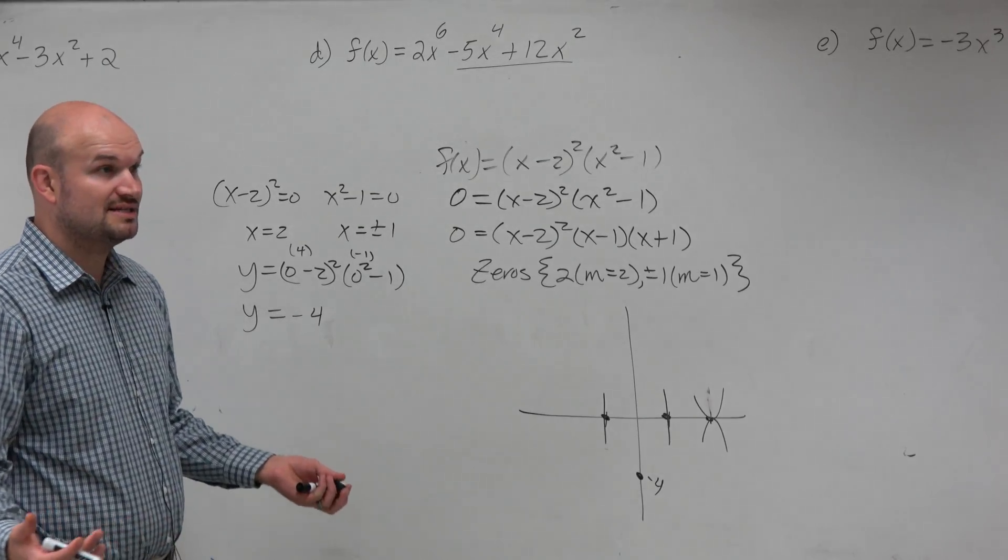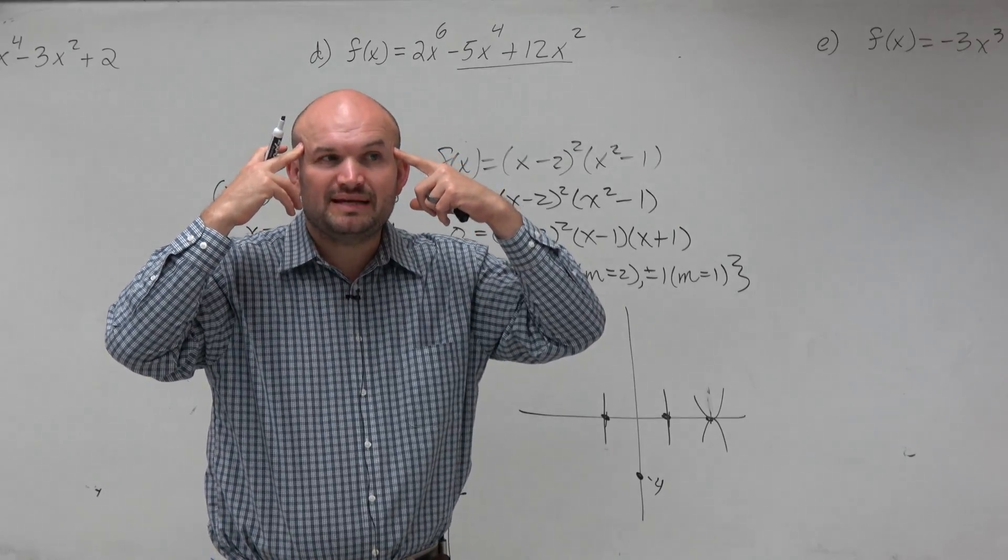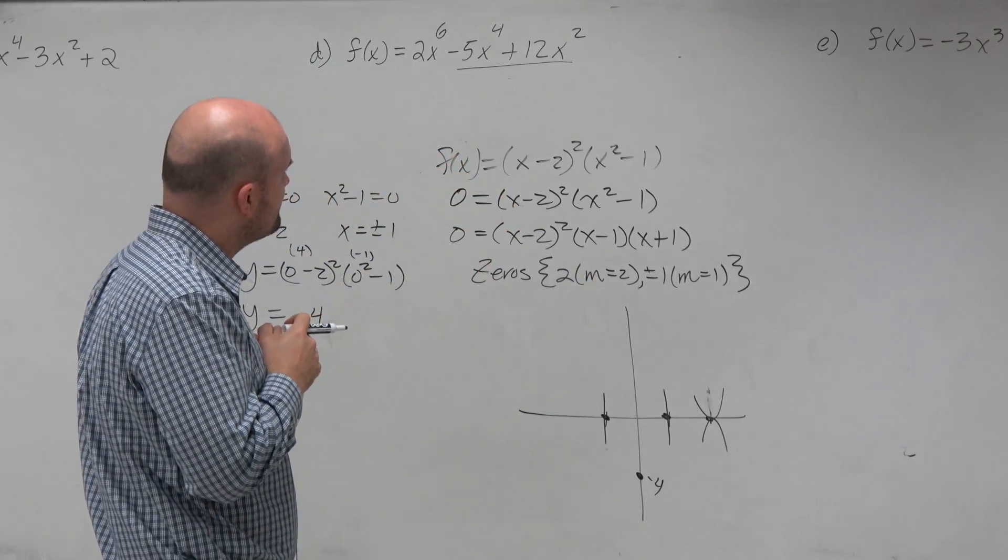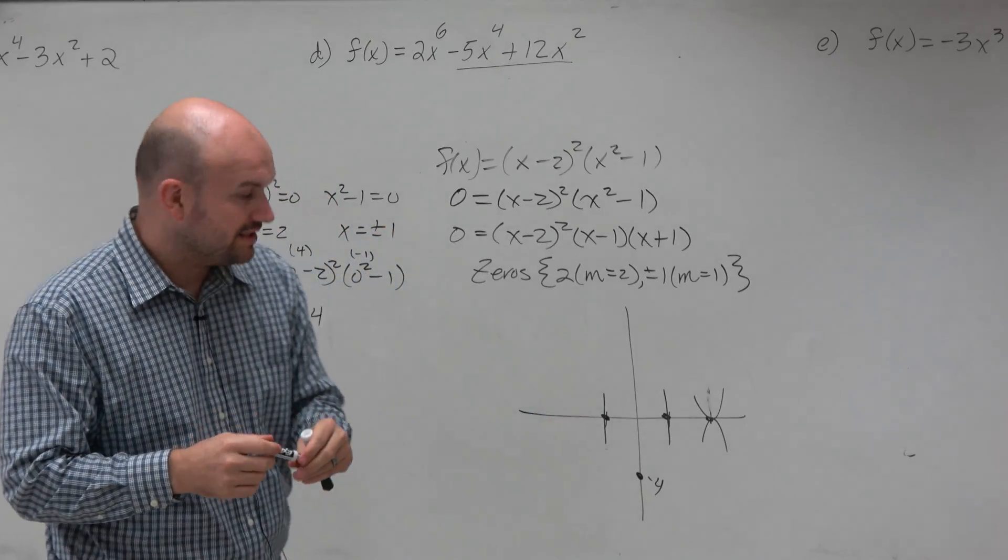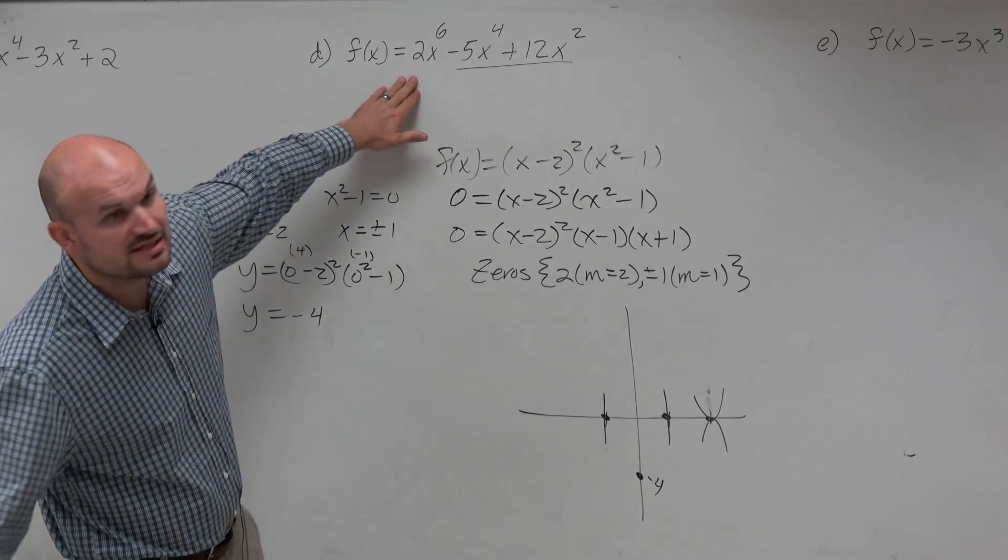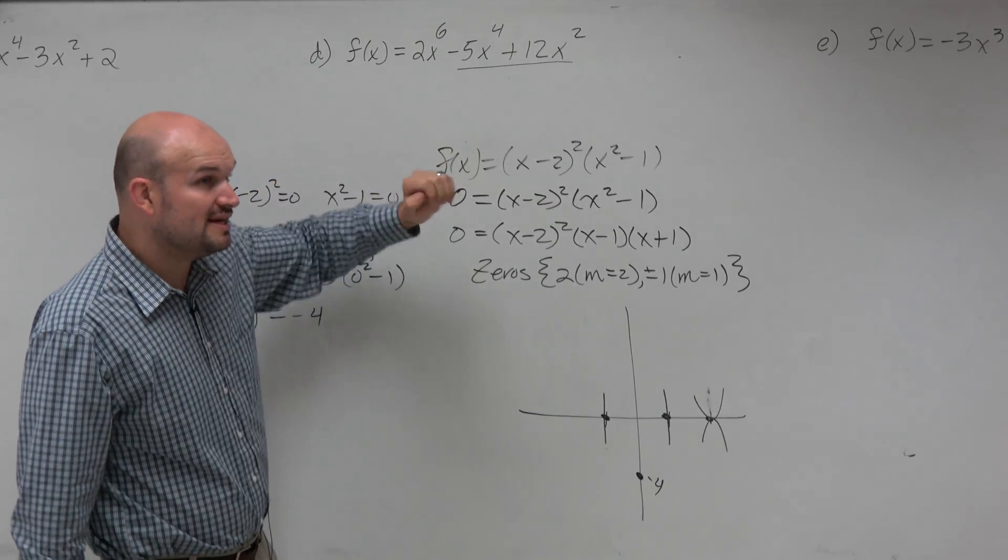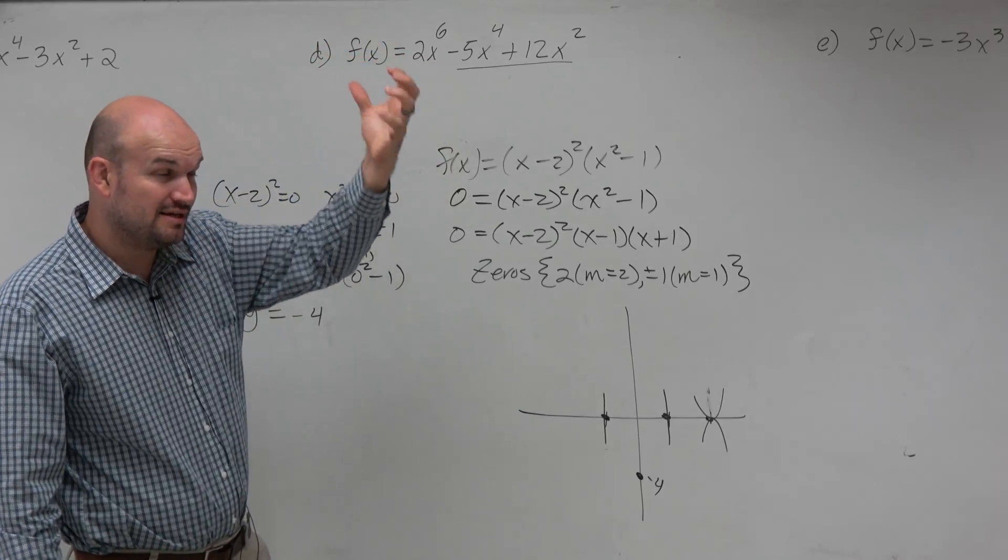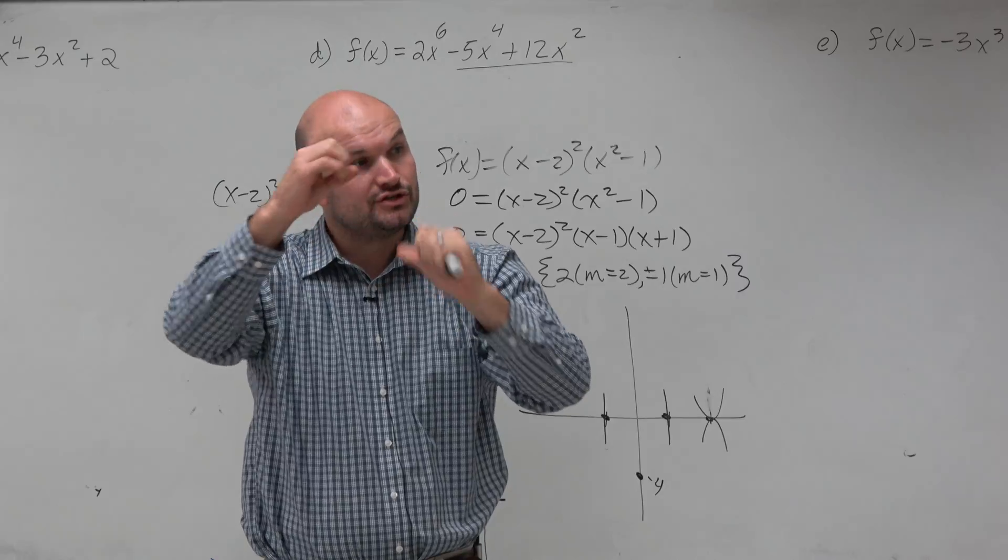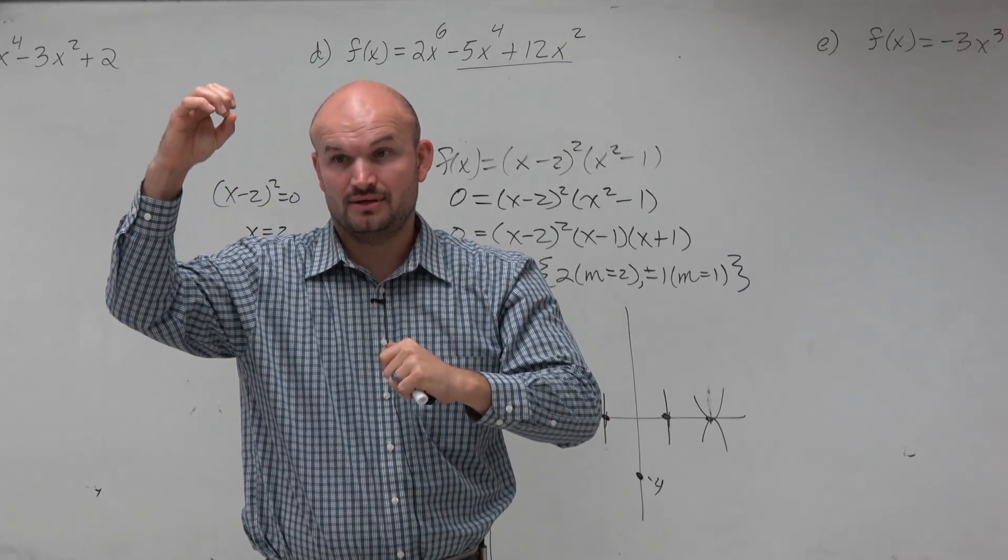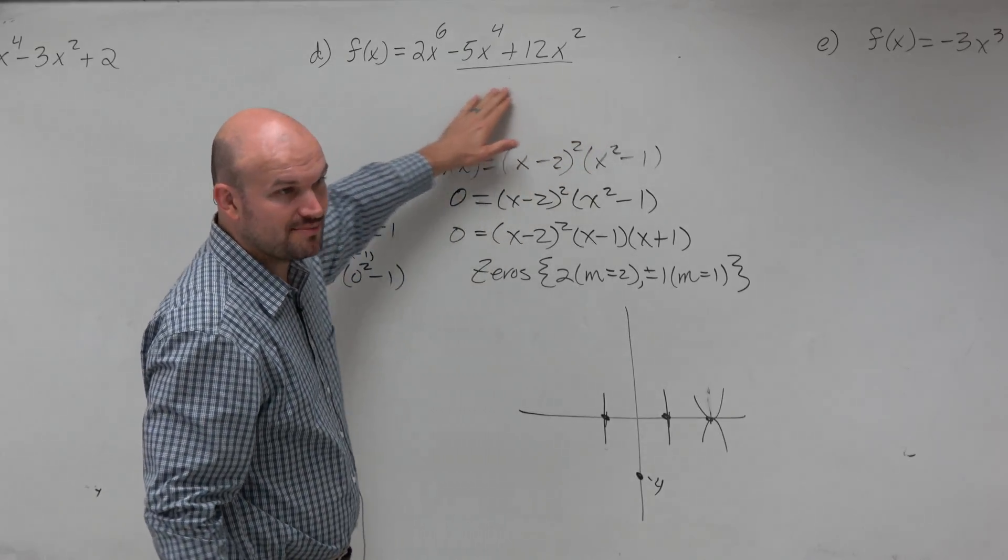So another thing we ask is end behavior. So we got to understand how do we work with end behavior here? And if you guys remember, end behavior is, we use the leading coefficient test. So basically, what's important here is, for instance, this function up here. If I wanted to find the end behavior of this function, the only thing I care about is that 2x to the 6. When it's in standard form, I only care about that leading term, the term that has the highest power. Everybody agrees? Highest power. Everything else doesn't affect my end behavior.